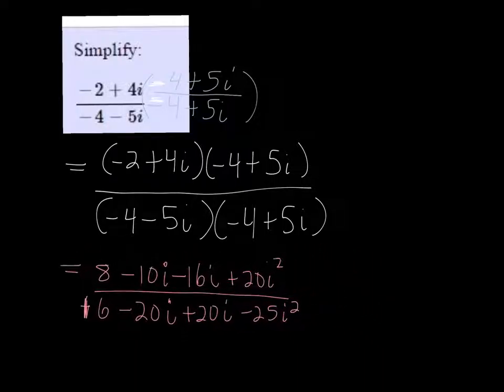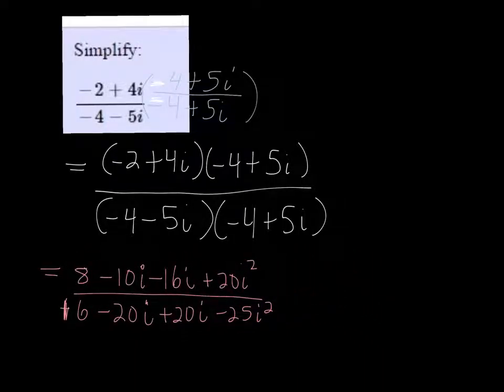So we just have to clean that up. In the top we can combine like terms and get 8 minus 26i, and then the i squared would be a negative 1, so it would be minus 20.